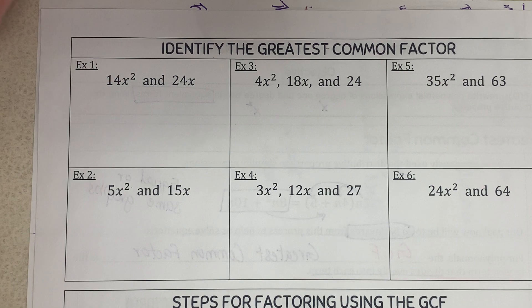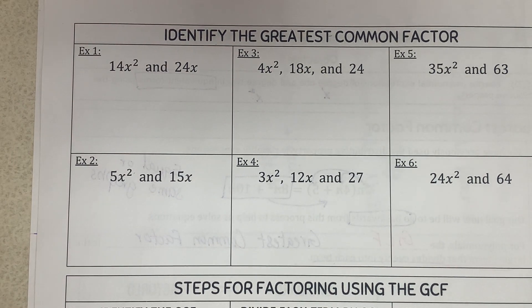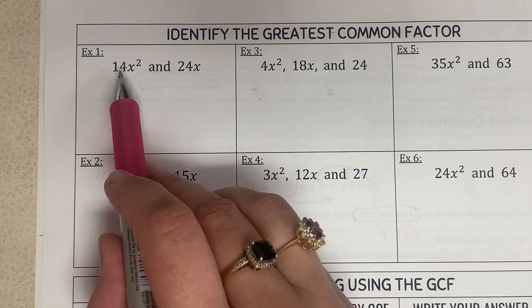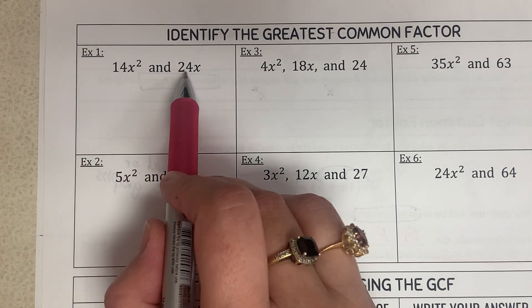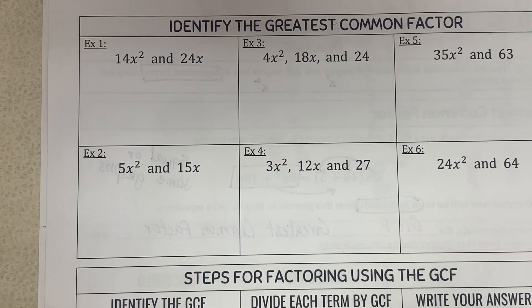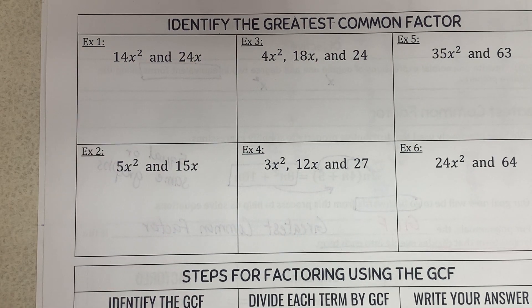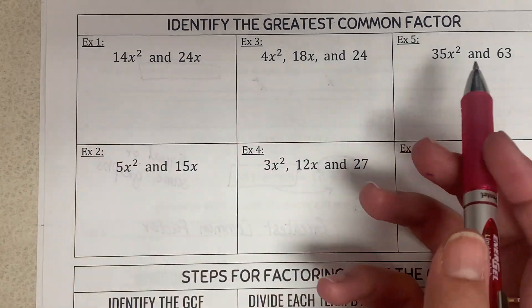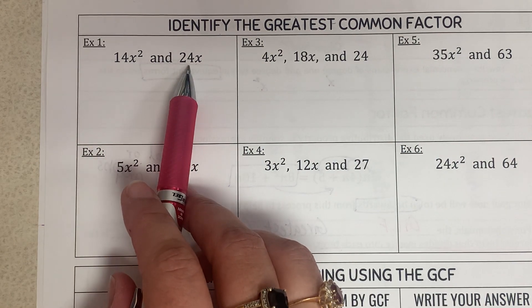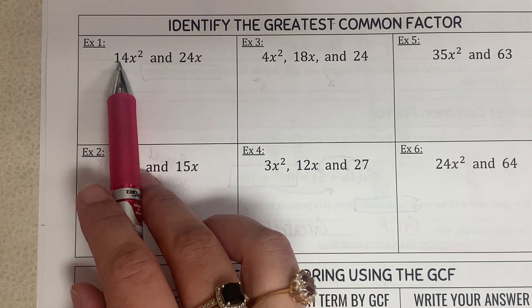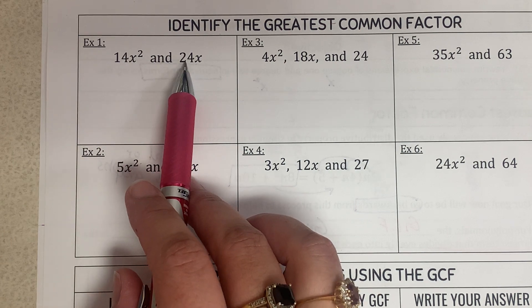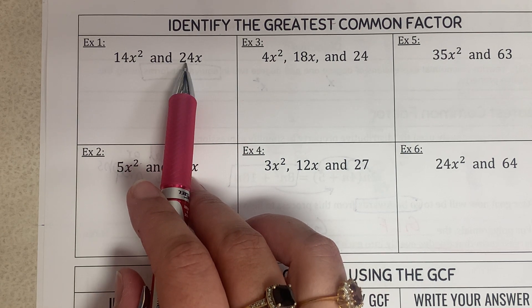Let's work on some examples — identify the greatest common factor. I have two terms: 14x squared and 24x. First, look at the coefficients 14 and 24. I need to find the largest number that divides both. They're both even, so both are divisible by 2. 14 divided by 2 is 7, and 24 divided by 2 is 12. Let's see if any other number works — actually, no, because 14's factors are only 2 and 7, so the GCF of the coefficients is 2.